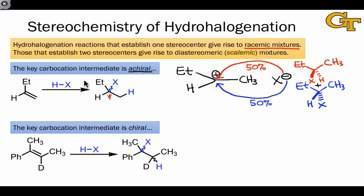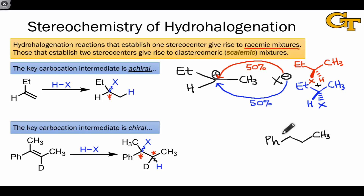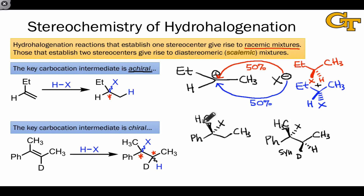What about a more complicated situation in which two stereocenters are set? Hydrohalogenation forms two new sigma bonds, so in a general situation we might form two new stereocenters. The issue is really syn versus anti. Enantiomers are still possible, and we should still expect a racemic mixture of any two enantiomers since none of the reactants are chiral. The two diastereomeric possibilities involve a difference in configuration at one of the two stereocenters. If H and X add in a syn fashion, we arrive at one product; if H and X add in an anti fashion, one stereocenter will match but the other will have a different configuration, indicating a diastereomeric relationship.